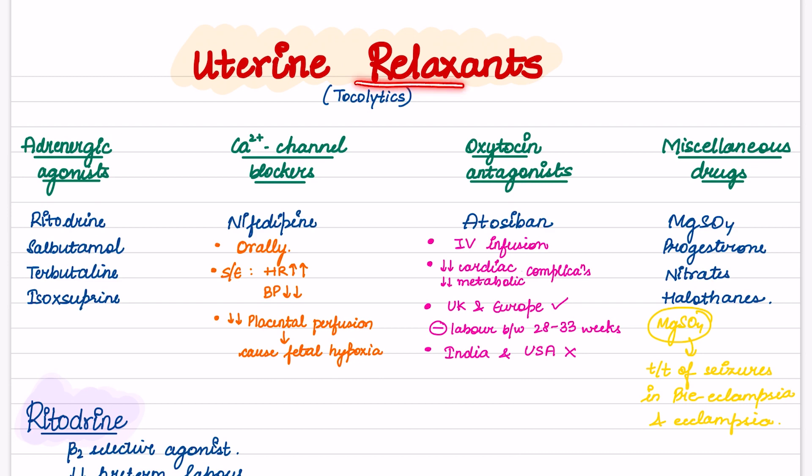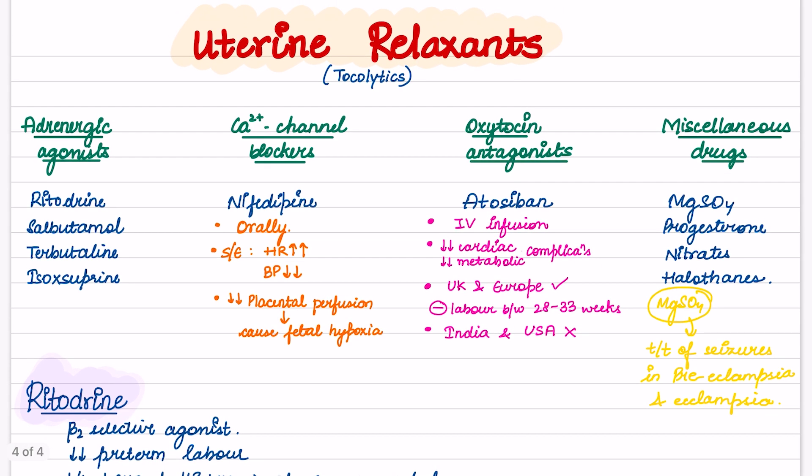Next moving on to uterine relaxants. They are also known as tocolytics. Majorly four classes: adrenergic agonists, calcium channel blockers, oxytocin antagonists, and miscellaneous drugs. In adrenergic agonists, we have rytodrine, salbutamol, terbutaline, isoxuprine. In calcium channel blockers, we have nifedipine. In oxytocin antagonists, we have atosiban. Miscellaneous drugs are magnesium sulfate, progesterone, nitrates, and halothanes.